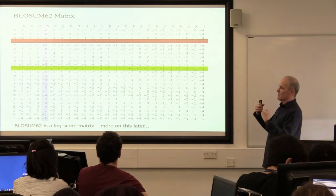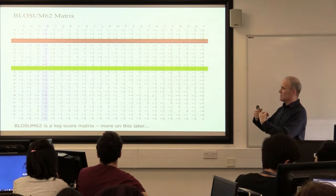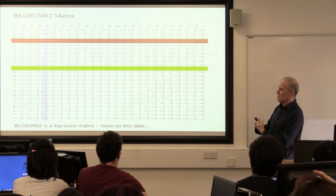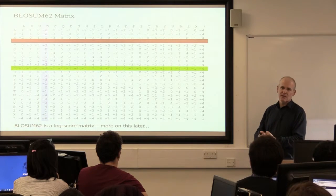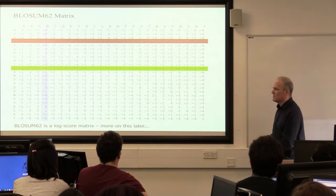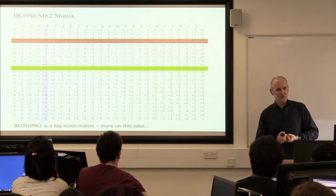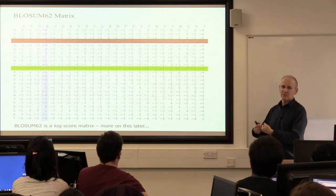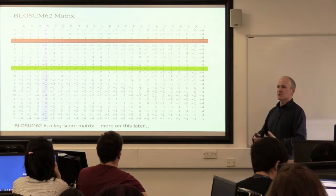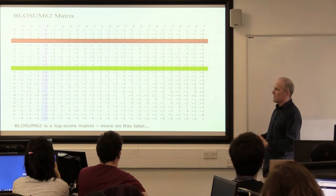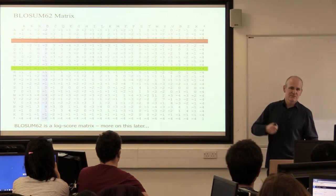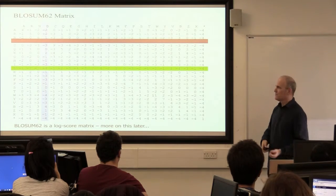Effectively, during evolution you're less likely to see a change between two amino acids that have a negative number than between two amino acids with a positive number.